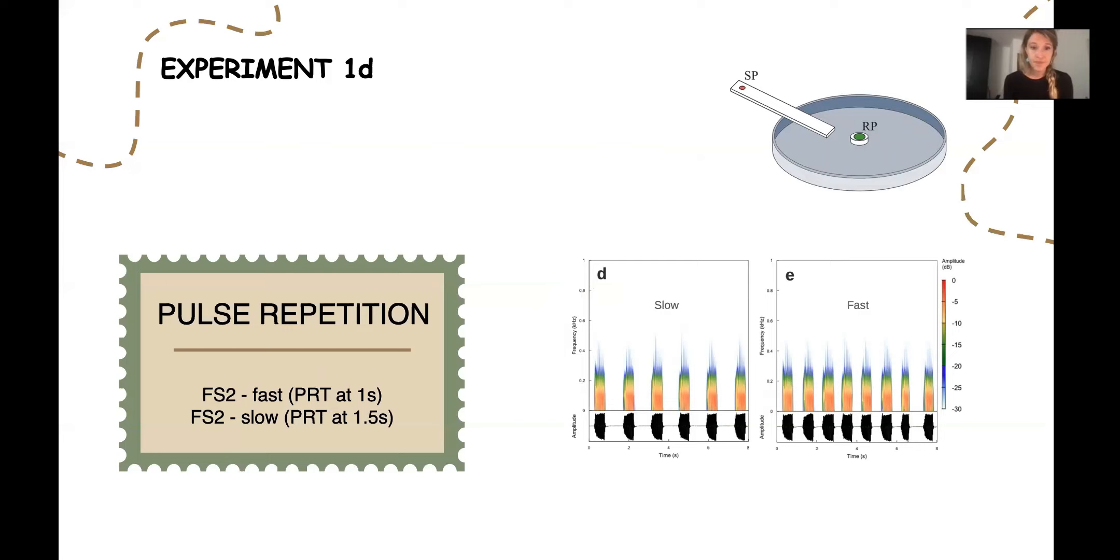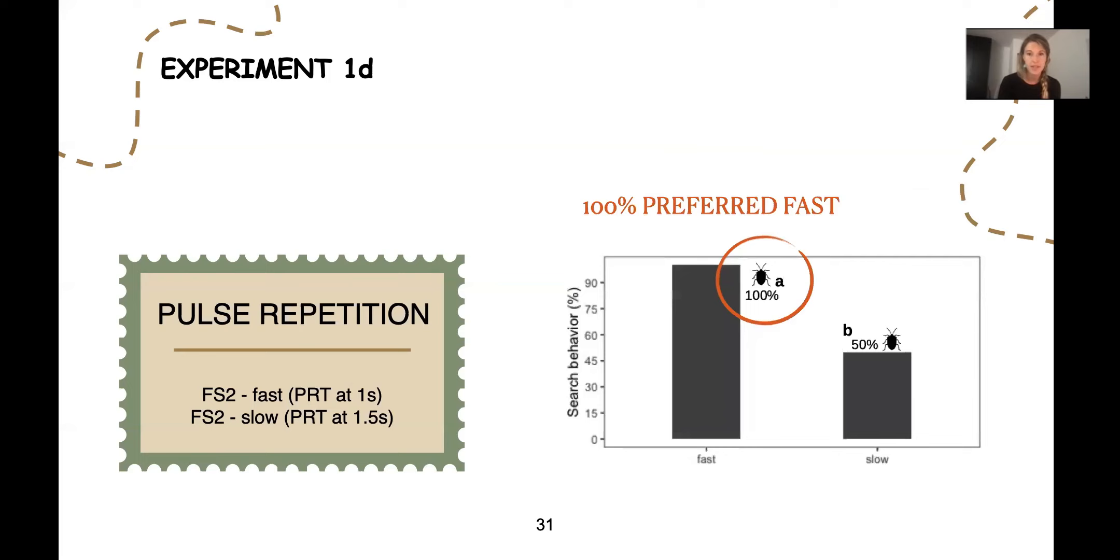By last on this part, we tested the pulse repetition, and we created two different playbacks, one that we call slow and one that we call fast. One had the pulse repetition time of one second and the other one of 1.5. Each version of these FS2 was randomly played to a male with a 30 second break in between. We counted the number of individuals that showed searching behavior in correspondence or immediately after each playback.